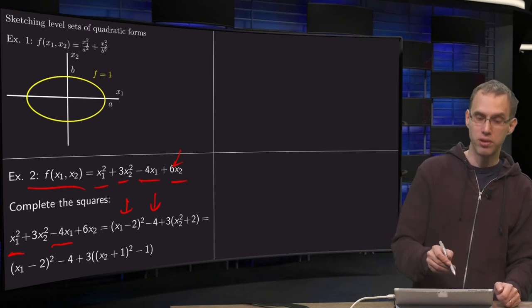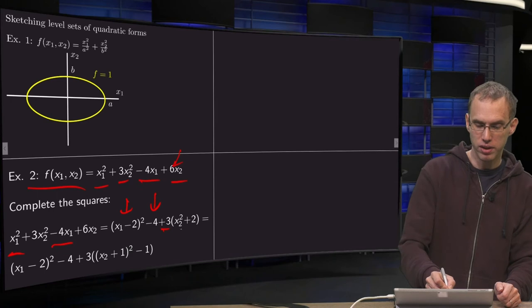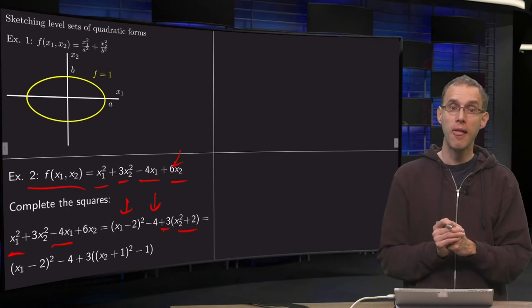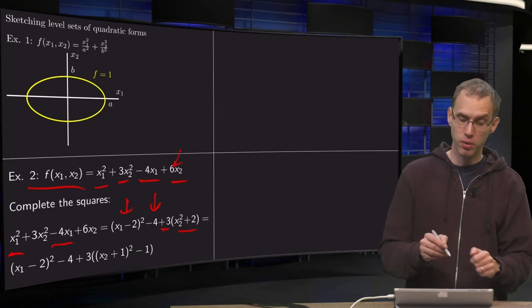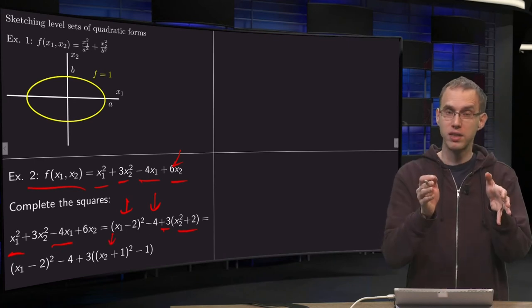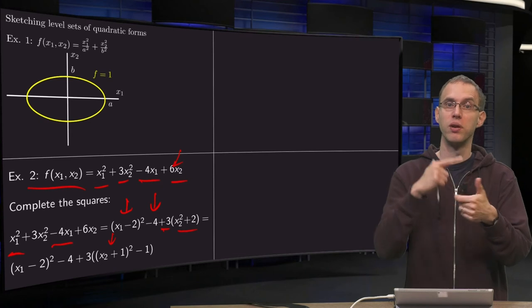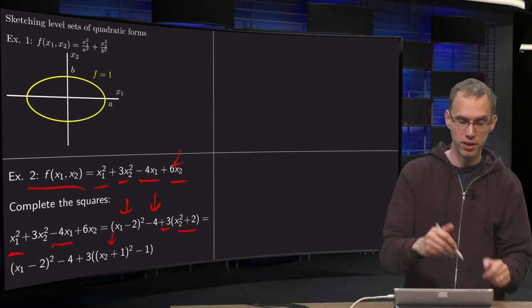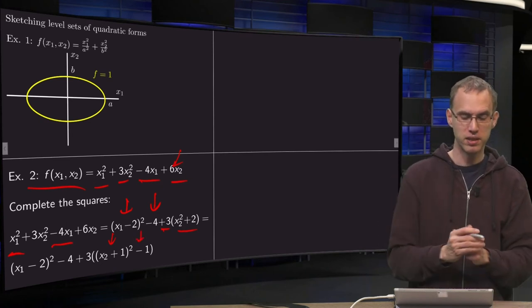And then we want to absorb the 6x2 in the x2 squared. So we pull out the 3 first, so we get 3 times (x2 squared plus 1), and then we complete the square. So x2 squared plus 1 yields (x2 plus 1) squared, well, that would yield x2 squared plus 2x2 plus 1, so you have to subtract a minus 1.